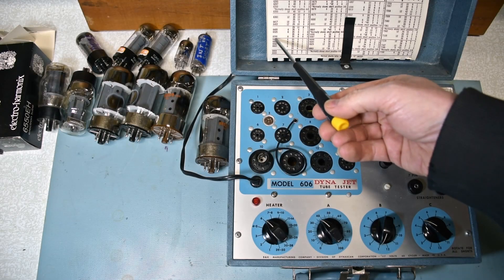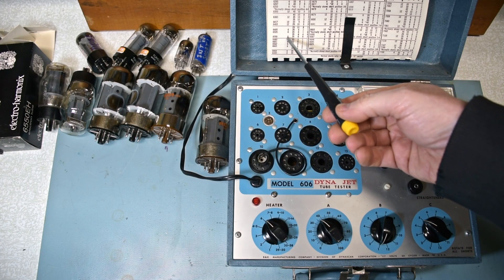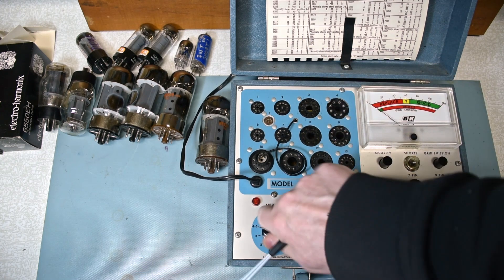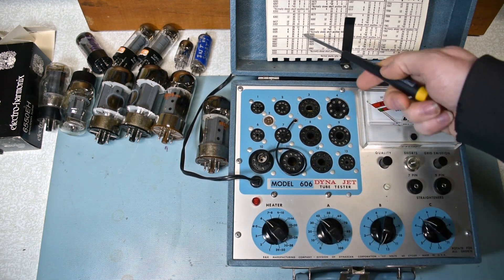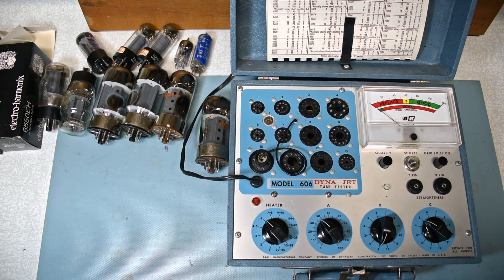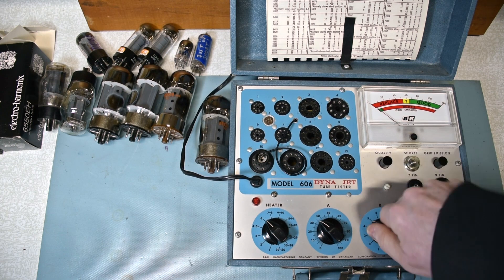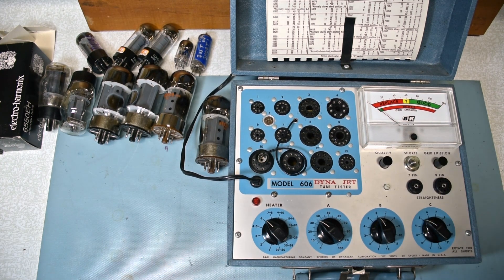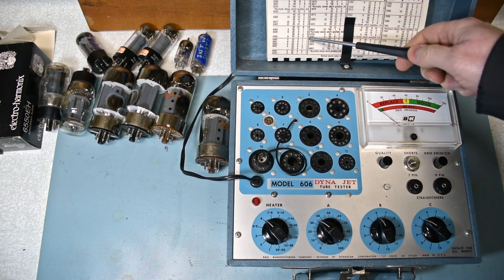So you basically just find your tube, 6550, heater position 6. And then switch A, B, and C are 35, 6, and 5. And then it's socket 3.